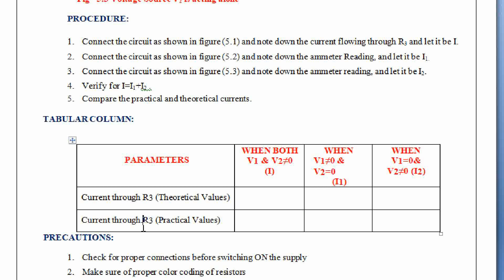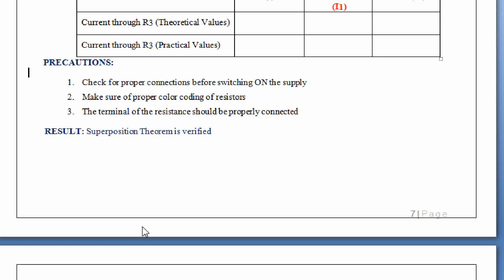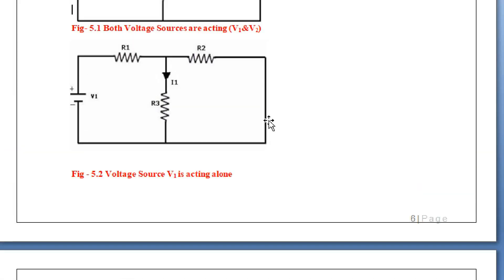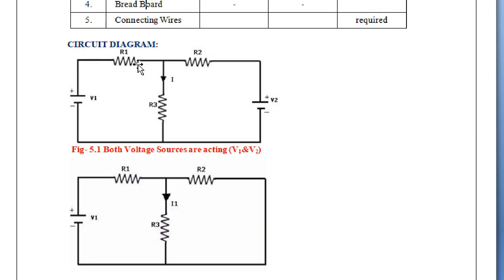While doing this experiment, we need to take care of precautions: check for proper connections before switching on the supply, make sure of proper color coding of the resistors, and the terminals of the resistors should be properly connected. In the lab experiment, we are going to consider three resistors: R1 is 470 ohms, R2 is 470 ohms, and R3 is 1 kilo ohm. By taking these values, we are going to do the experiment for verification of superposition theorem.